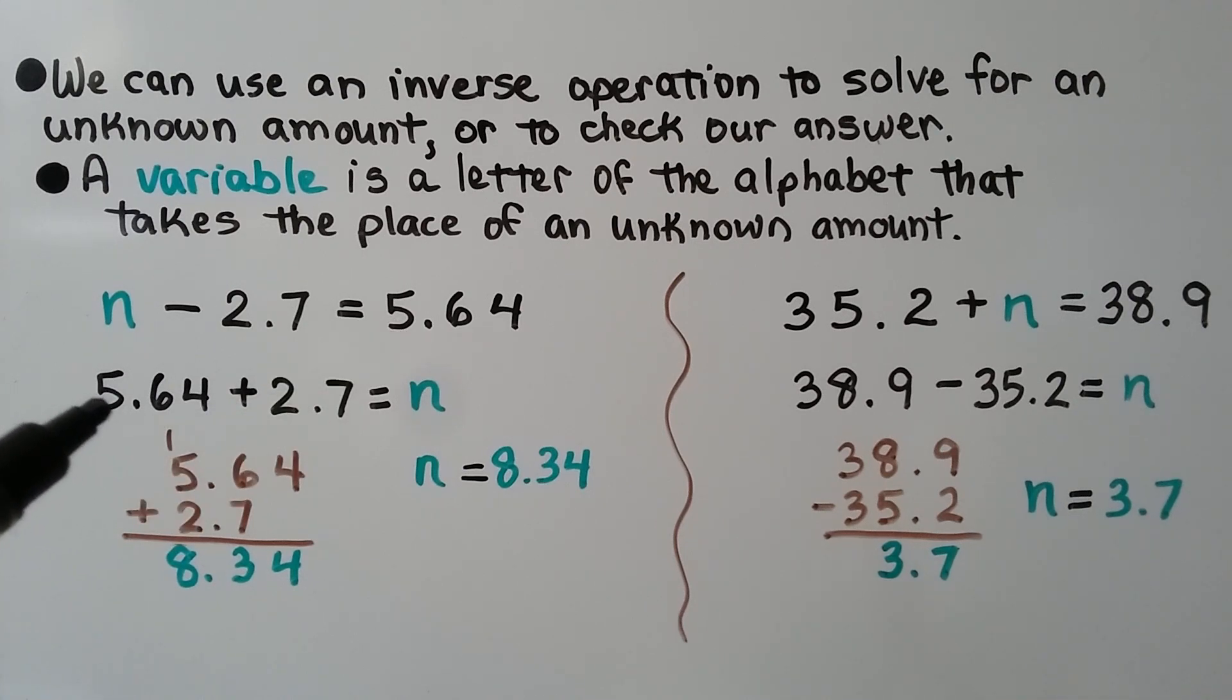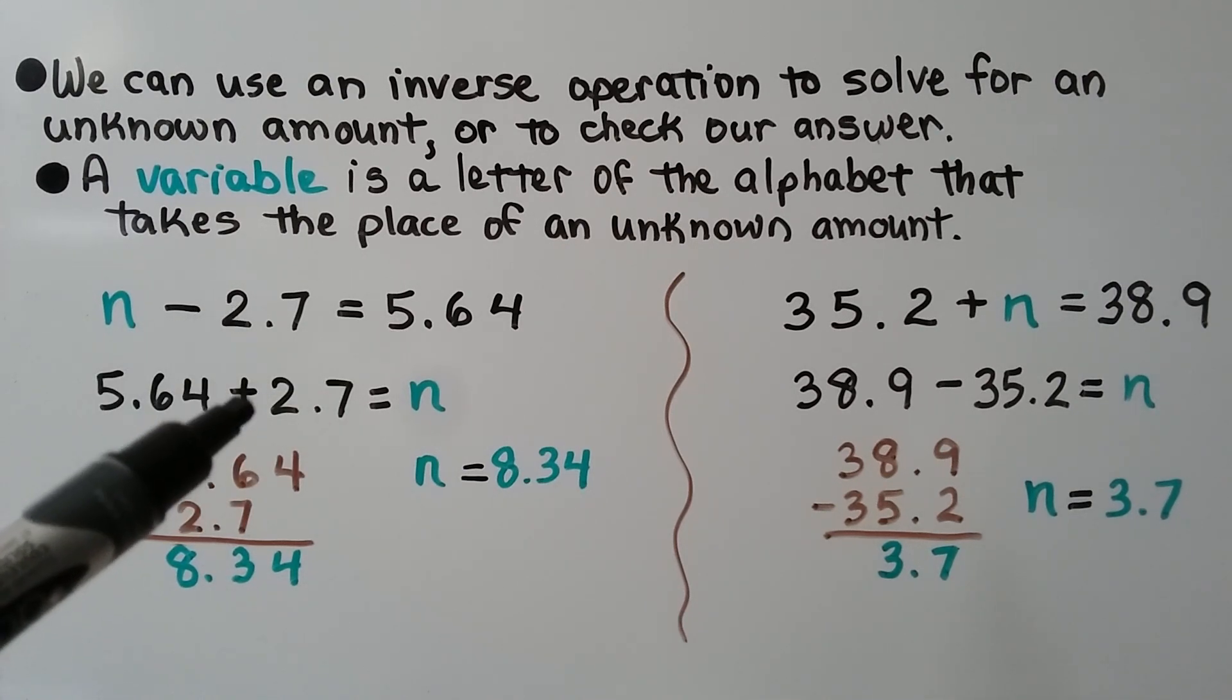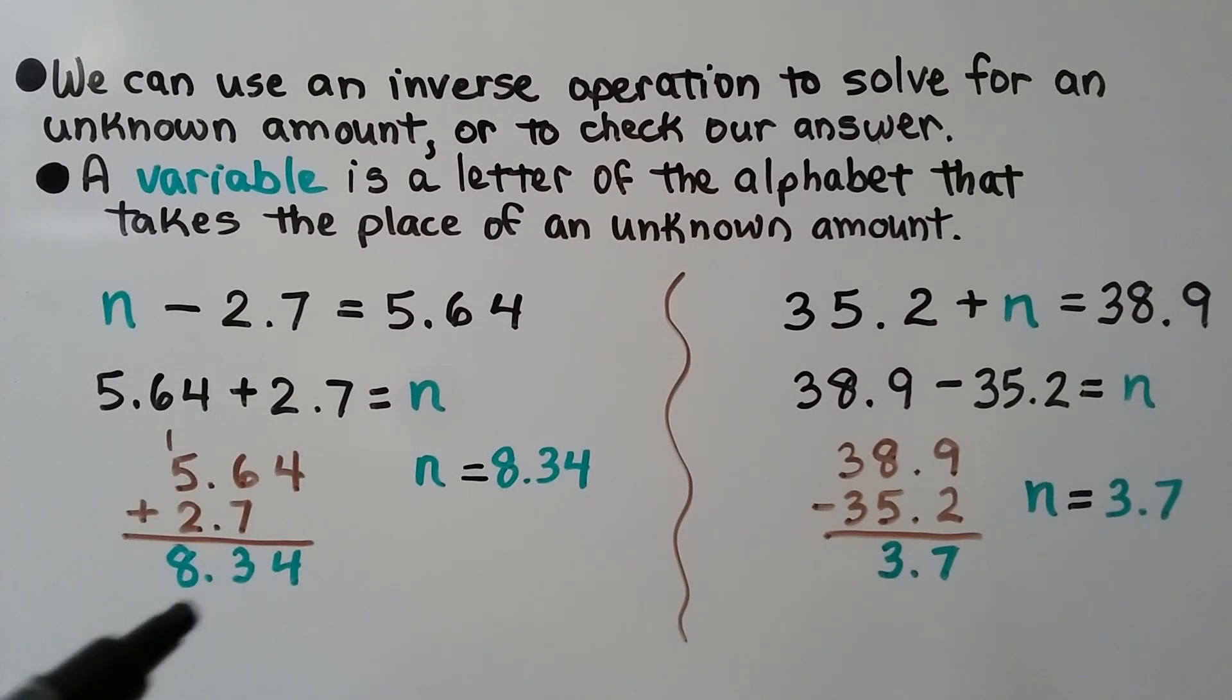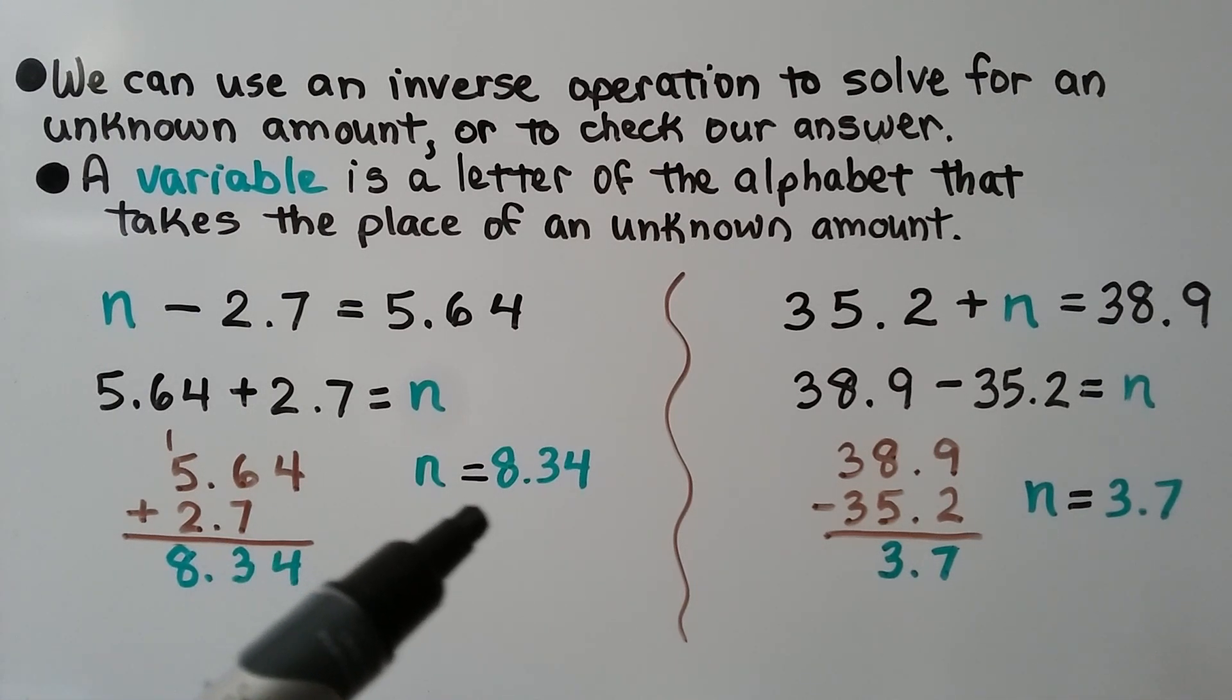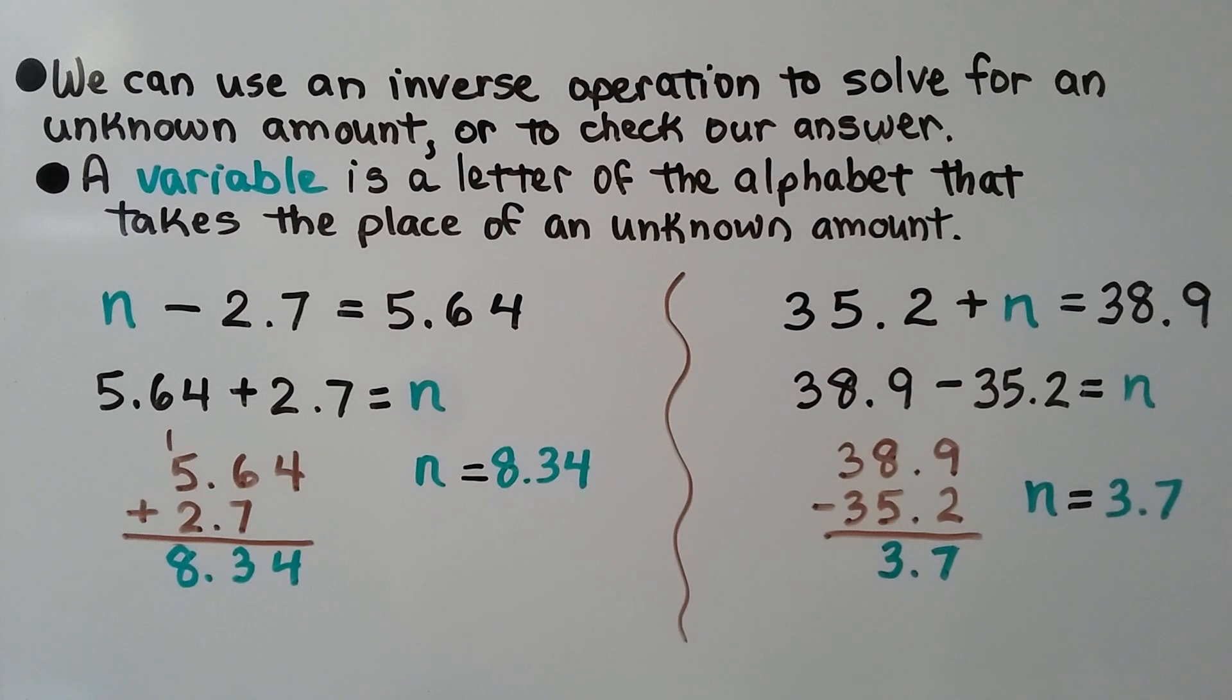This is subtraction, so the inverse operation would be addition. We take the difference, 5.64, and we add the subtrahend 2.7. We can add it using place value. We get 8.34. That means n is equal to 8.34.